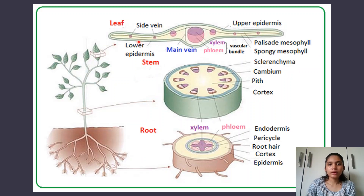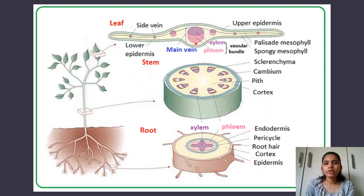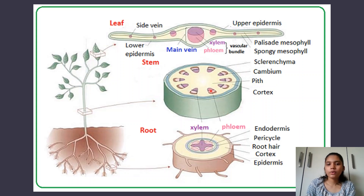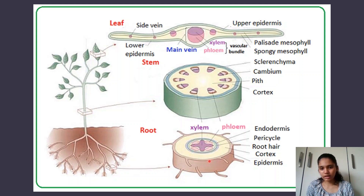In the leaf, the xylem is on top and the phloem is below — I made that mistake in my mock paper, so don't make the same mistake. In the stem, the xylem is on the inside and the phloem on the outside. In the root, the xylem is on the inside forming a cross, and the phloem forms four circular structures on the outside of that cross.